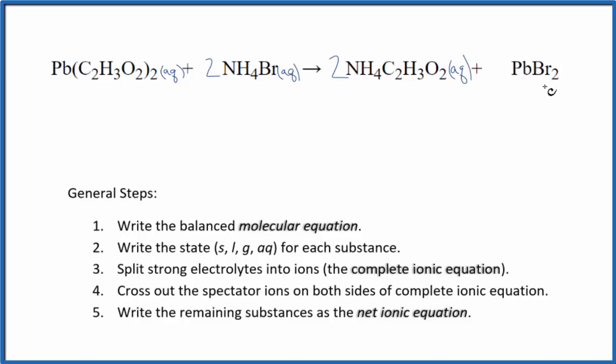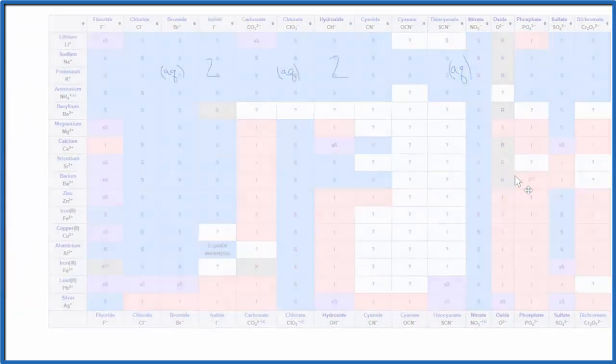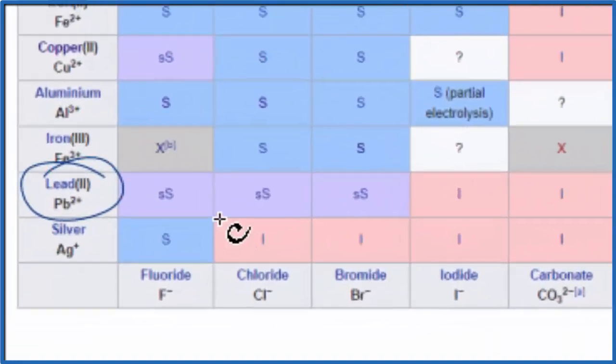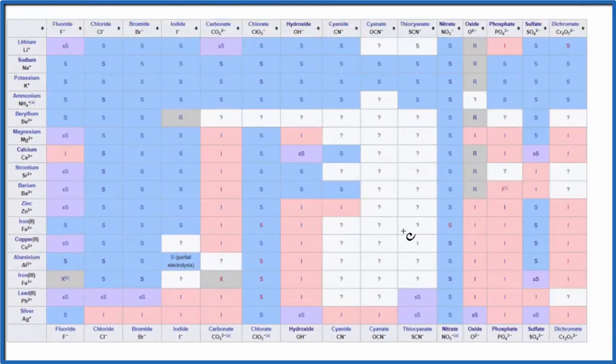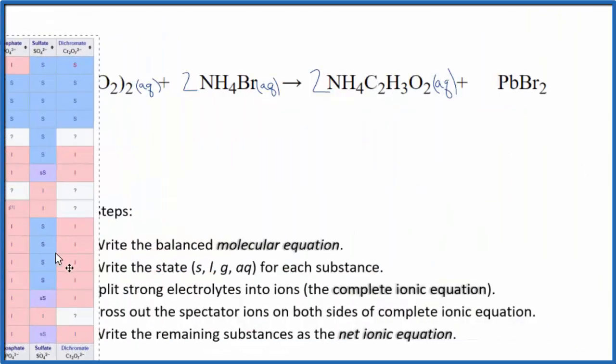But whenever I see a lead compound - lead chloride, lead bromide, lead iodide - I like to make sure I know whether that's soluble or insoluble. So let's look at a chart here. We find lead, and then bromide, so we go over and up, and that's SS - that means it's slightly soluble. A little bit of it dissolves, but really not very much.